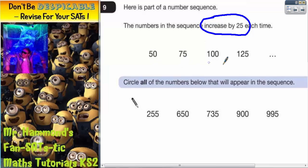50, 75, 100, 125. It then says circle all the numbers below that will appear in the sequence.